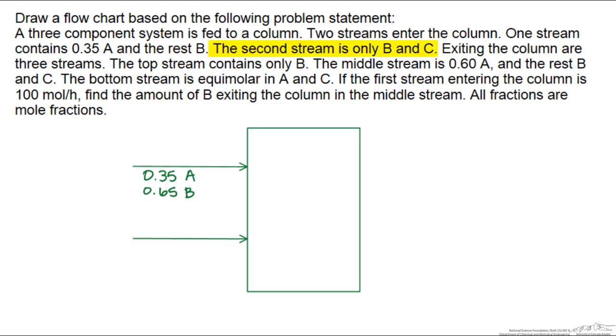The second stream is only B and C. So we're going to call this Y sub B, and one of the things that I do is I put the number of the stream after the component, because we will have mole fractions in many of the streams, and this prevents us from mixing up one of the mole fractions in one stream with the one in the other. The rest of it is Y sub C.